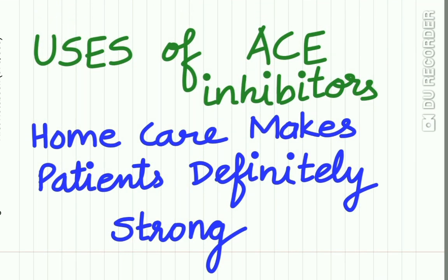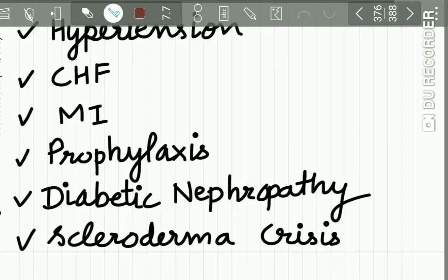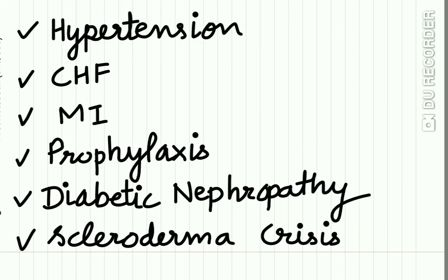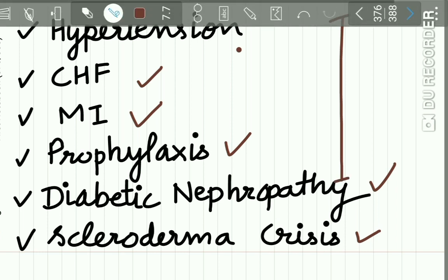What are the uses of ACE inhibitors? An easy mnemonic is 'HOME CARE makes the patient definitely strong.' Each first letter represents one use: H for hypertension, C for CHF, M for myocardial infarction, P for prophylaxis, D for diabetic nephropathy, and S for scleroderma crisis.